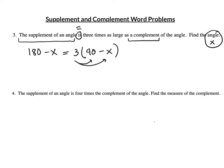Number 4: The supplement of an angle is four times the complement of the angle. The supplement is 180 minus x. It equals four times the complement — four times (90 minus x). Now this is tricky because students will get x and think they're done, but that's not what it asks for. It asks for the complement. So we have to distribute. I'll do this one with you.